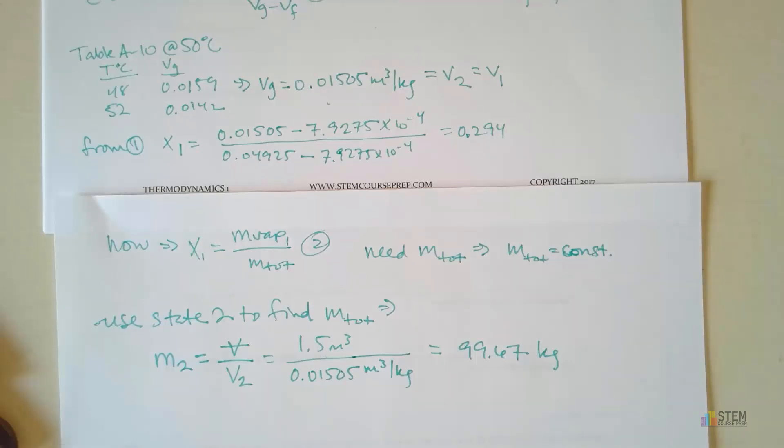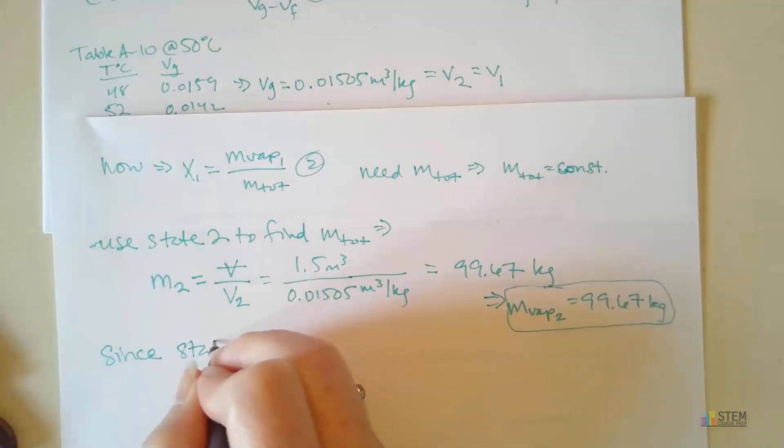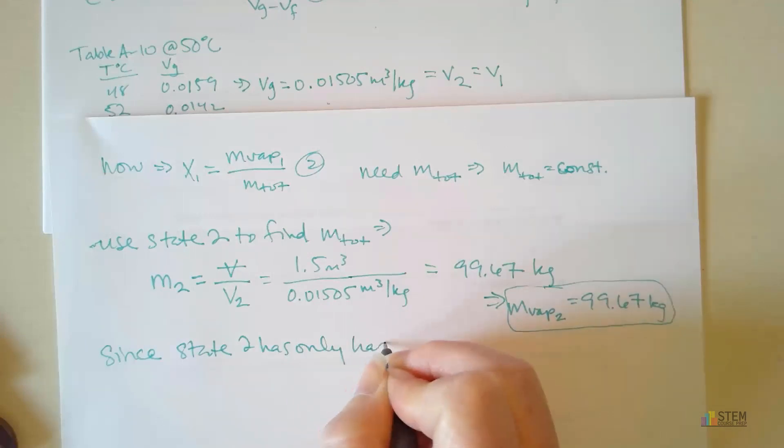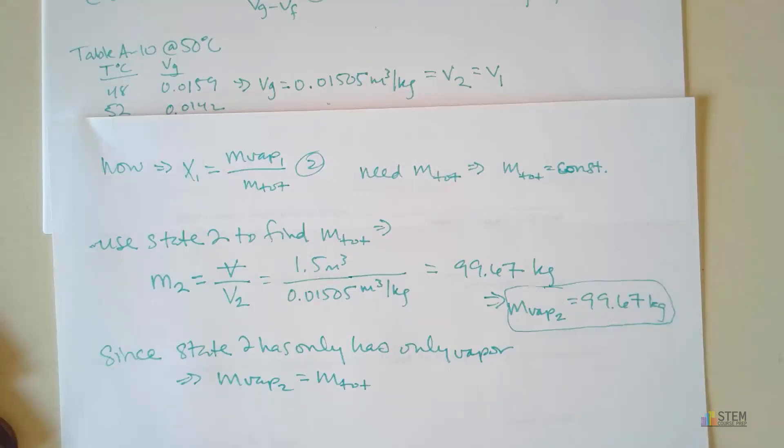Now if that's M2, what is the vapor mass at state 2? It's the same value, right? Because remember, state 2, we had 100% vapor. So this means that mass of the vapor at state 2 is 99.67 kilograms. All right, so not only is this the vapor mass that we were looking for at state 2, it's also the total mass in the system. Same value. So if state 2 has only vapor, then the mass of the vapor at state 2 equals the total mass. So that's a good point to recognize there. Otherwise you'd be stuck.